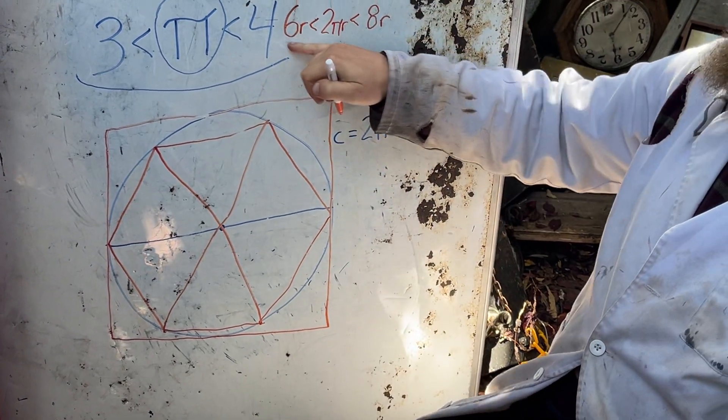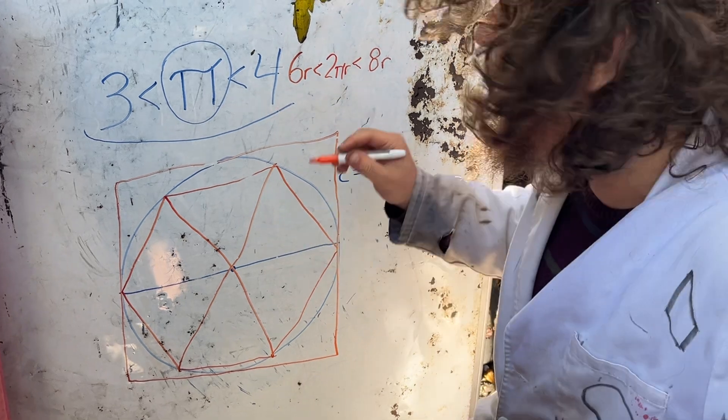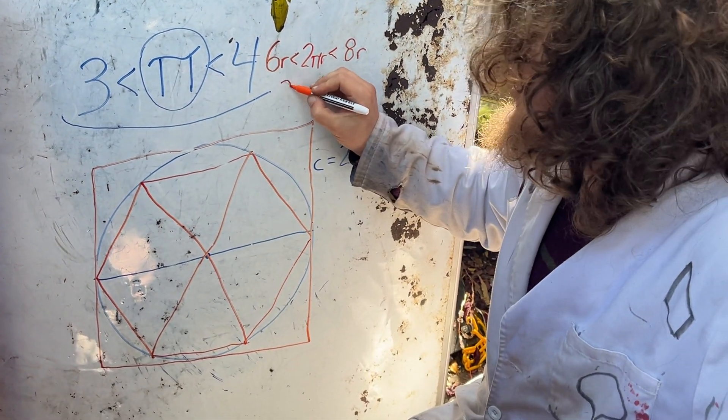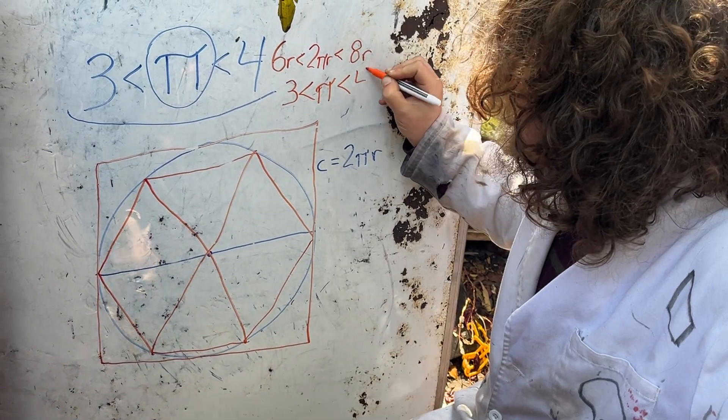Now we have this little inequality where we can divide by 2r to get that 3 is less than pi, which is less than 4.